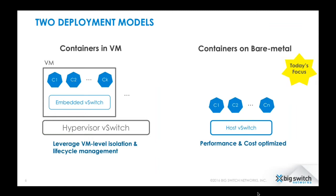The right-hand side shows a model where containers are running on bare metal hosts. In this case, there is no VM — containers are directly deployed on a host operating system and connected through a network, represented here by a host vSwitch or Linux bridge. The benefit here is performance and cost optimization, though VM-level isolation and lifecycle management tools are still being developed. Our focus today is going to be this right-hand model: containers on bare metal Linux environments.